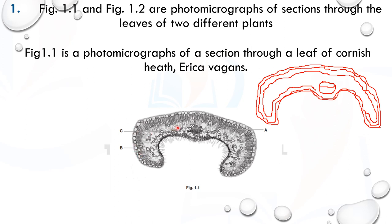So to summarize: A is palisade, B is epidermis, C is spongy mesophyll. In a plan diagram you're showing outlines of tissues, not drawing individual cells.